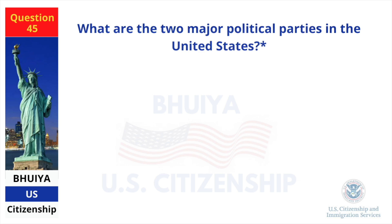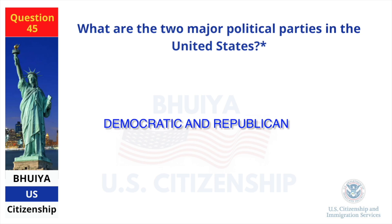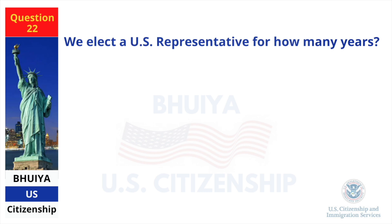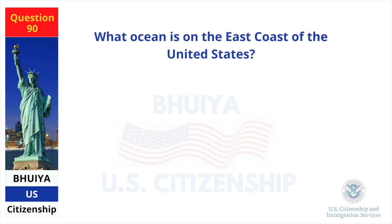What are the two major political parties in the United States? Democratic and Republican. We elect a U.S. representative for how many years? 2. What ocean is on the east coast of the United States? Atlantic Ocean.